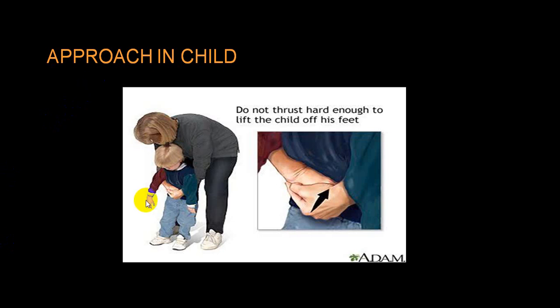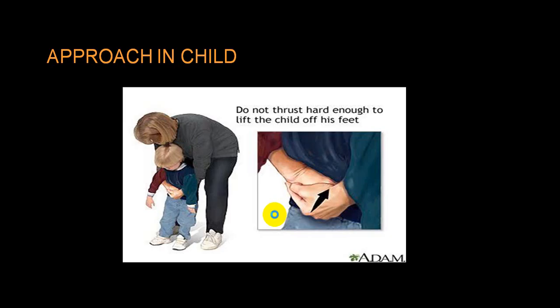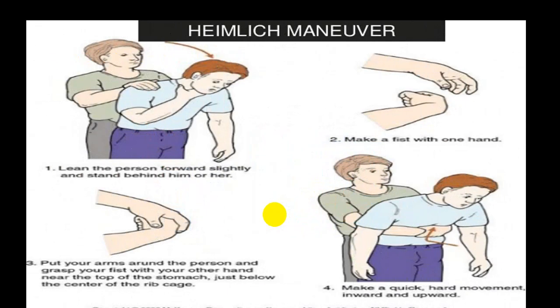For foreign body in children, you can perform the manual maneuver (back blows); in adults, this is called the Heimlich maneuver — a thrust given over the lower chest in case of a foreign body.